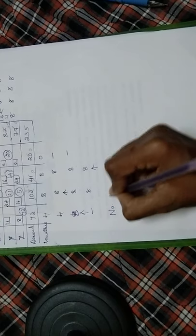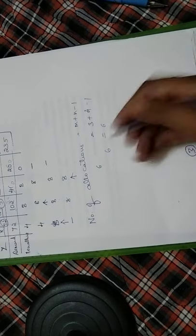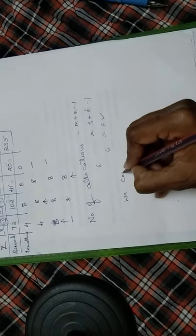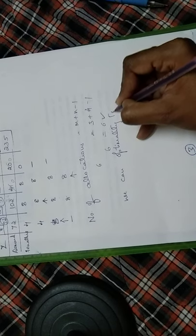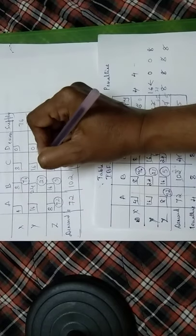The number of allocations made is 6, which satisfies the degeneracy condition m + n - 1 = 3 + 4 - 1 = 6. Since this condition is satisfied, we can proceed with the optimality test. The table is redrawn clearly with all six allocations so that the ui and vj values can be computed without confusion.